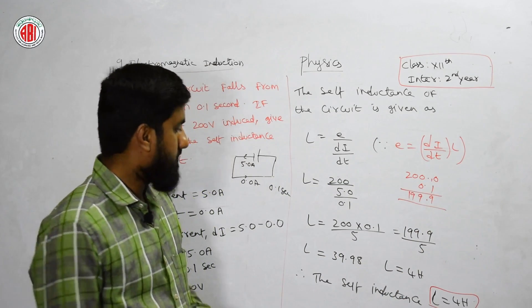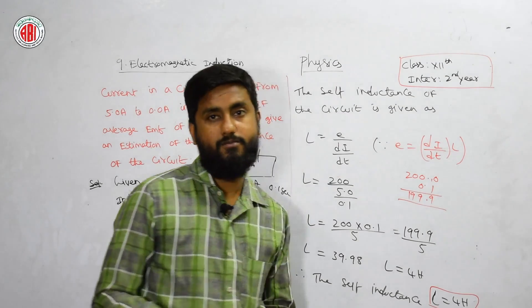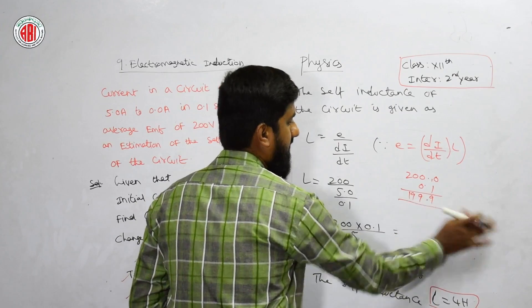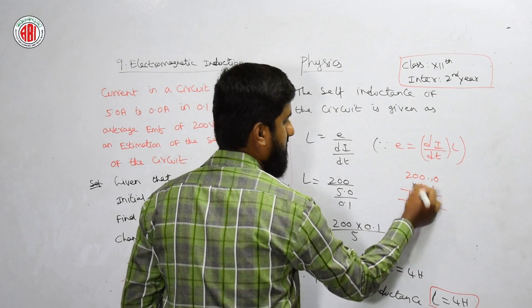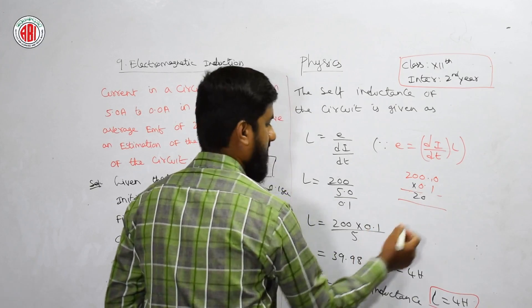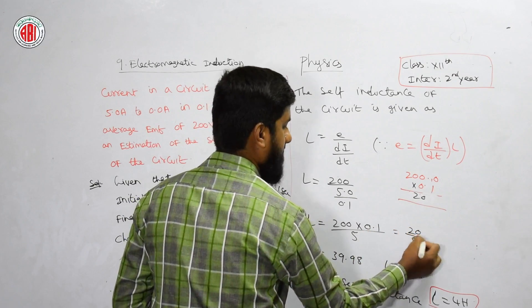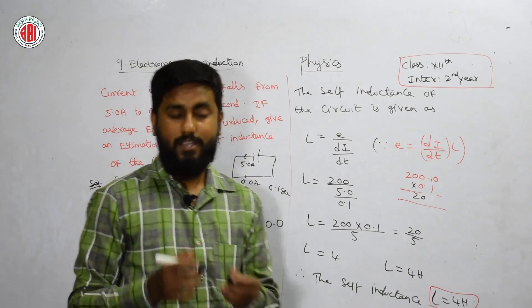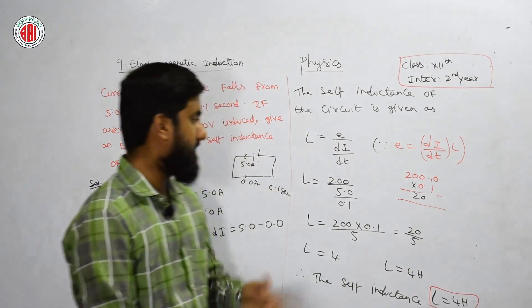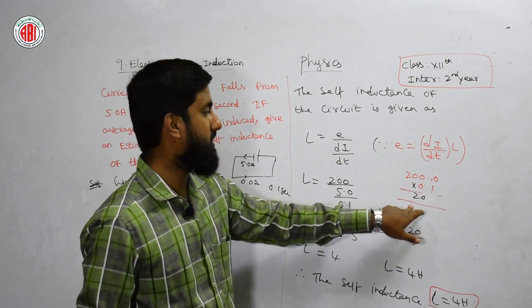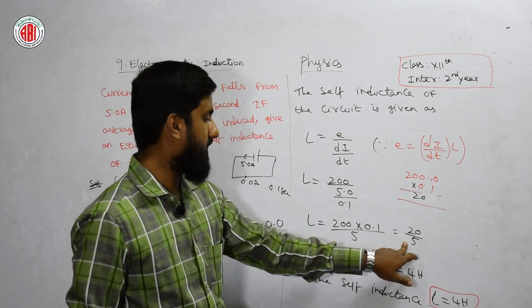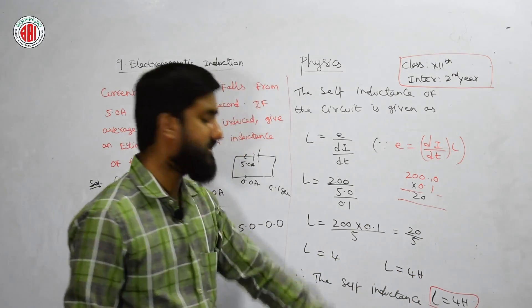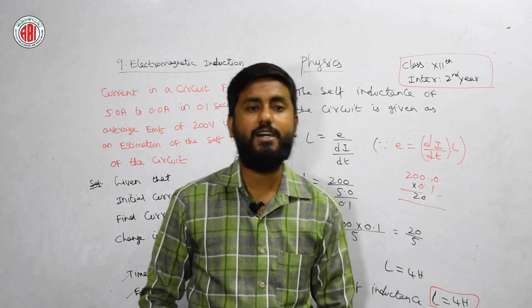L equals 200 by 5 by 0.1. Here I have minused, but I need a small correction here. We are not supposed to minus, we are supposed to multiply. We will get answer like 20. It will become 20 by 5. Then it will become directly L equals 4. L equals 4 henry. Here there is a small correction. The self-resistance is 4 henry. Simple answer.